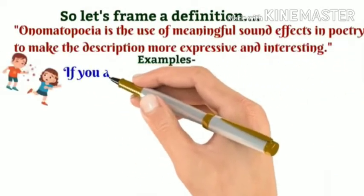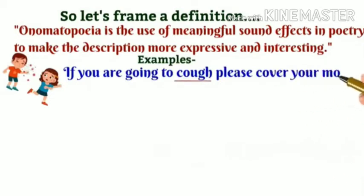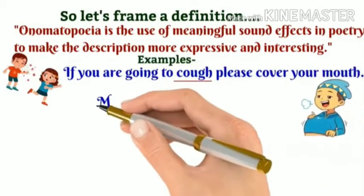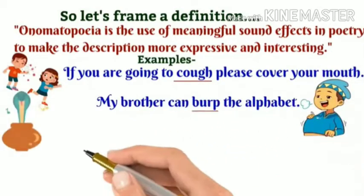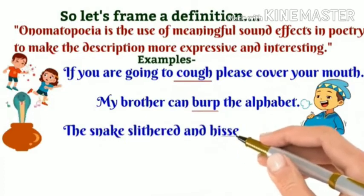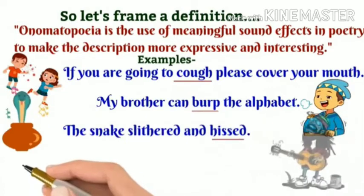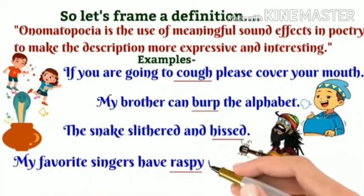Examples of onomatopoeia: 'If you are going to cough, please cover your mouth.' 'My brother can burp the alphabet.' 'The snake slithered and hissed.' 'My favourite singers have raspy voices.'